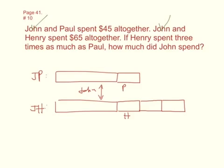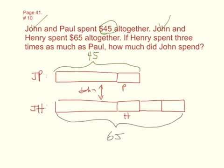Now, I can label the amount of money spent here. So this here is $45, John and Paul. And down here, John and Henry, we've got $65. What I see by looking at this bar model is that the John and Henry bar has extra, right? And I can look at these amounts to figure out, well, how much extra? They've got $65 and John and Paul have $45, which means this extra amount here is $20, right? $65 minus $45 is $20. So that extra bit is $20.